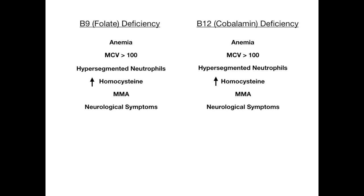In both cases, you'll have an elevated homocysteine level. Where you differentiate between a B9 and a B12 deficiency is in the following: in a B12 deficiency, you have an increased level of MMA, but in a B9 deficiency, that MMA is not increased. Additionally, a B12 deficiency will have the presence of neurological symptoms, whereas a B9 deficiency will not.